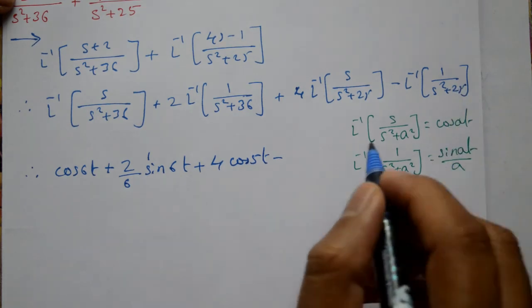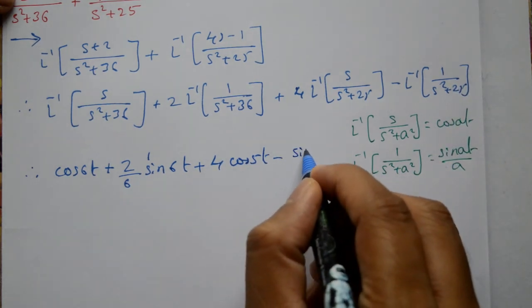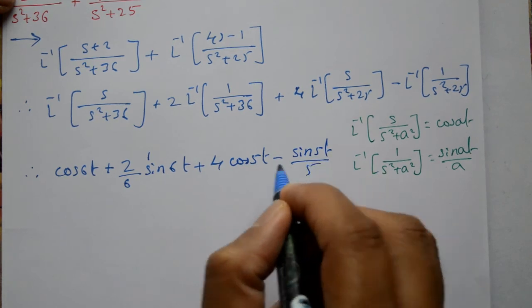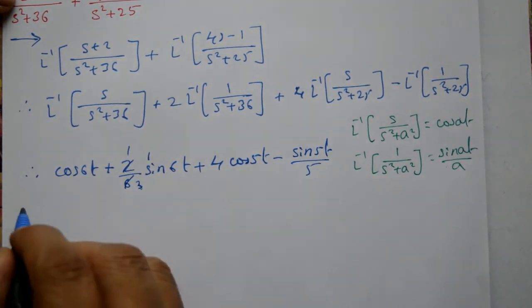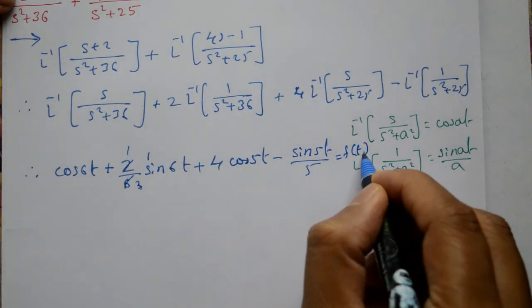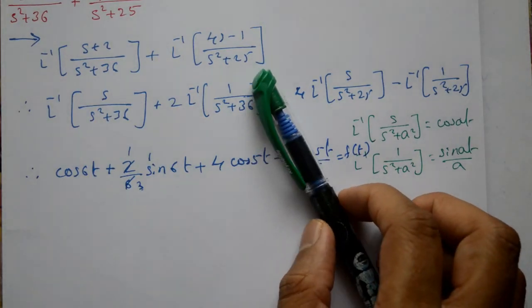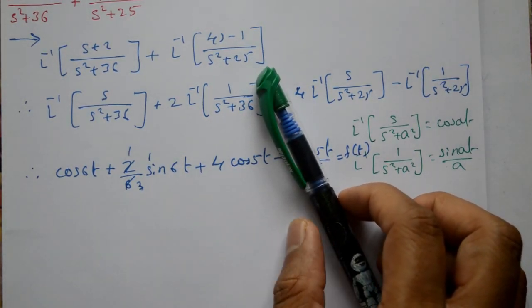...again using the second formula, this is sin 5t divided by 5. The coefficient is 1 by 5, which simplifies to 1 by 3 here. This part is f(t). Please subscribe to my channel, like and give comments. Thanks for watching.